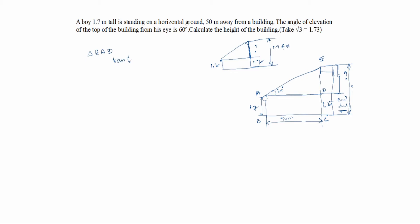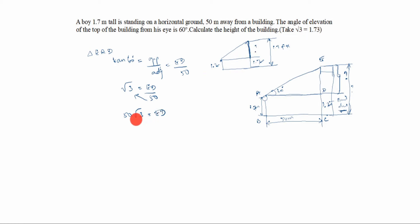tan 60 degrees is equal to opposite by adjacent. In this triangle, the opposite side is ED and the adjacent is 50 meters, so tan 60 = ED / 50. tan 60 is root 3, so root 3 = ED / 50. Cross-multiplying: 50 root 3 = ED. The value of root 3 is 1.73, so we multiply 50 × 1.73.